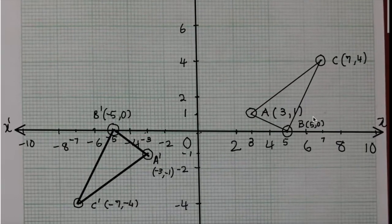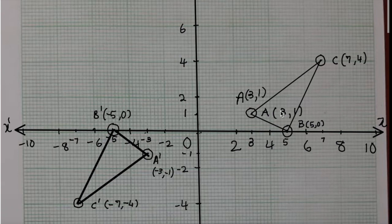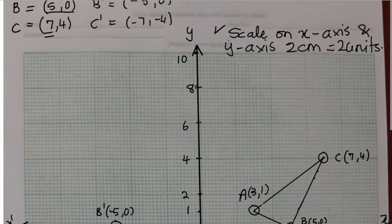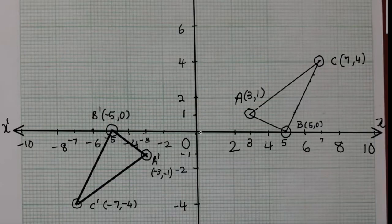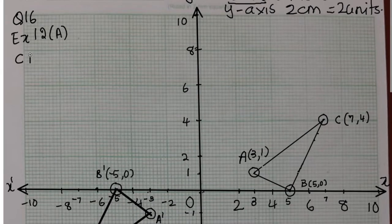Let us write the coordinates clearly: A dash is (-3,-1), B dash is (-5,0), and C dash is (-7,-4). We write A as (3,1) outside the diagram to keep things tidy. Most importantly, don't forget the scale — since C is (7,4), taking 2 cm equal to 1 unit would not accommodate all points, so the adjusted scale is essential.